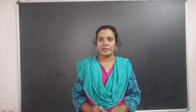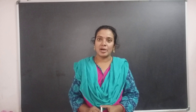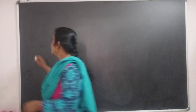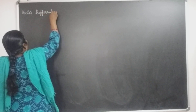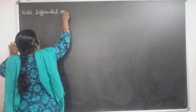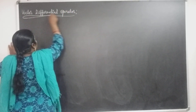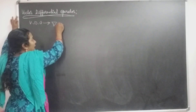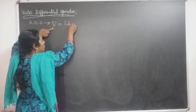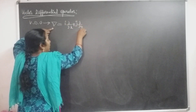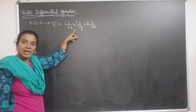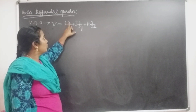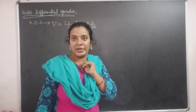What is the vector differential operator? The vector differential operator is denoted by del, and this del is defined as i ∂/∂x plus j ∂/∂y plus k ∂/∂z. This is an ordinary vector as well as it has differential operators. That is ∂/∂x, ∂/∂y, ∂/∂z — these are partial derivative symbols.